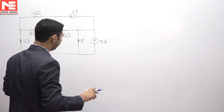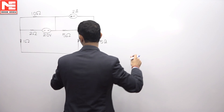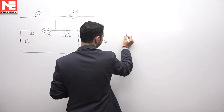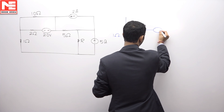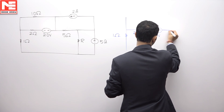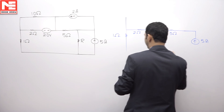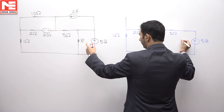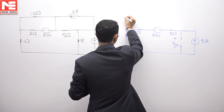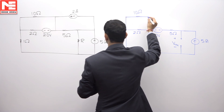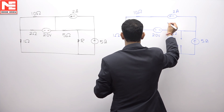We can calculate the Thevenin equivalent across these terminals. First, I have to calculate the Thevenin voltage. For the calculation of the Thevenin voltage, I need to make it open-circuited. Therefore, redrawing the circuit: it has 1 ohm, 2 ohm, plus-minus 20 volts, 5 ohm, 5 ampere, and here we had R. We are making it open-circuited between these terminals to find Vth. Also, this is 10 ohm, there is a current source of value 2 ampere, and here it is a short circuit.